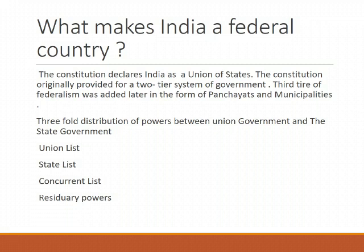The Constitution clearly provided a three-fold distribution of legislative powers between the Union Government and the State Government. It contains three lists: the Union List, State List, Concurrent List, and Residual powers.